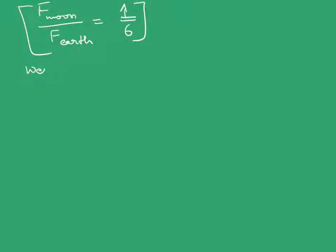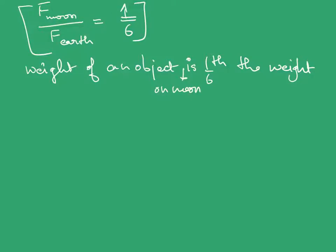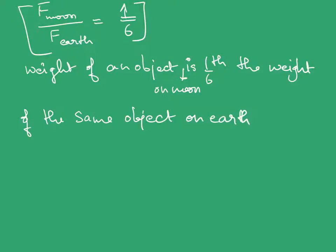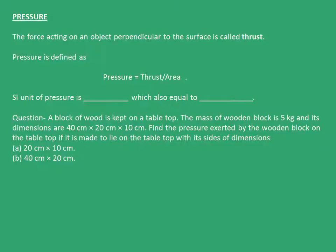Hence, the weight of an object on the moon is one-sixth the weight of the same object on earth. I am using weight here because weight equals the force with which the earth or moon attracts the object. Hence I am interchanging force with weight here. Now, pressure.